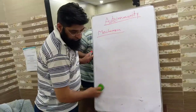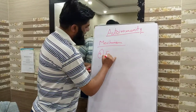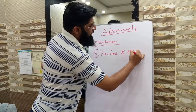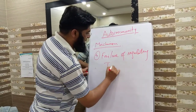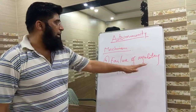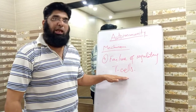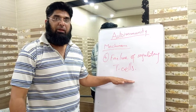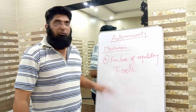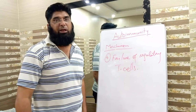The fourth mechanism is failure of regulatory T-cells. When regulatory T-cells fail to develop, autoimmunity develops, because regulatory T-cells are pro-inflammatory in nature.